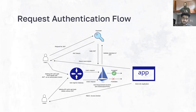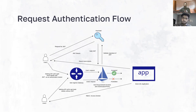We will make an API call to our bookinfo application with a JSON web token generated from KeyCloak and attach it as an authorization bearer. That request will go through the request authentication and authorization policy. If the JWT attached is valid, we will get a 200 response; otherwise we will get a 403.